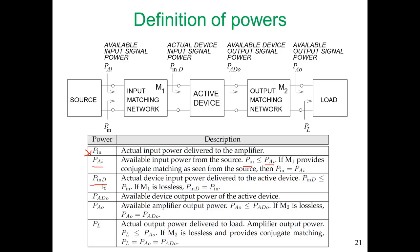On the output side, there's an available power at the output of the device, and then there will be power available to the load. Because of loss, the power available to the load could be less than the power available at the output of the active device. Finally, PL is the power that's actually delivered to the load.